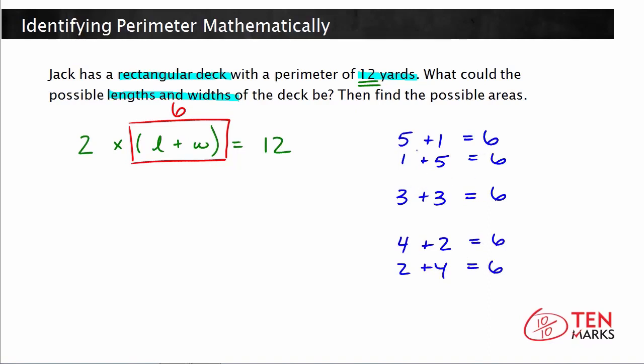Now let's take a look and say what would the area be if we used any of these combinations. What if you had 5 and 1? Remember that area equals length times width. It doesn't matter if the length is 5 or 1, it just matters that we're using these two numbers. So 5 times 1 equals 5 yards squared.